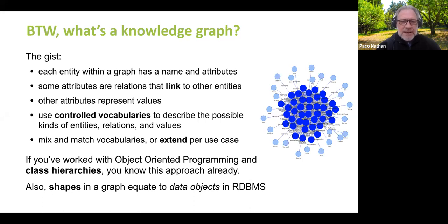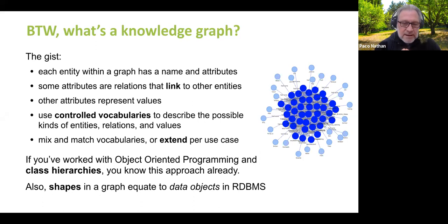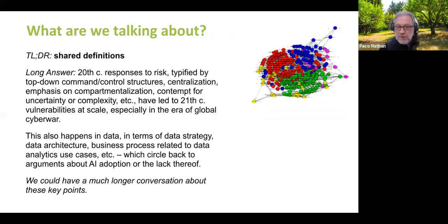One thing that's really interesting about working with knowledge graphs is that the shapes of data and the shapes of the connections become very important. That kind of topology — it's very similar to the notion of data objects in relational databases. In terms of knowledge graphs, what we're talking about is shared definitions and the problem of not having shared definitions across an organization.